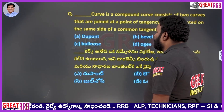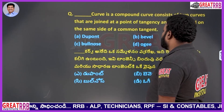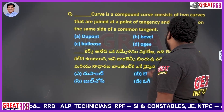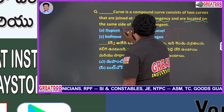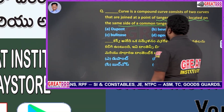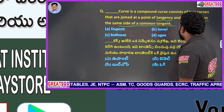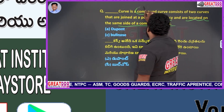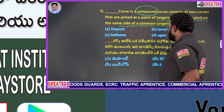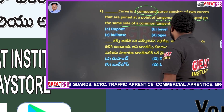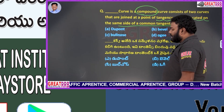A dash curve is a compound curve that consists of two curves joined at a point of tangency and located on the same side of the common tangent. The options are: A) dew point, B) bevel, C) bullnose, D) ogee curves. So the question is asking which curve is a compound curve.